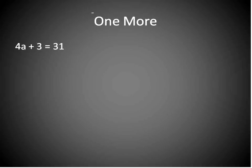Let's do one more. 4a + 3 = 31. Again, we start with the addition subtraction. We're going to subtract 3 from both sides of this equation. 3 minus 3 is 0. So I just have 4a on the left side. 31 minus 3 will leave me with 28.